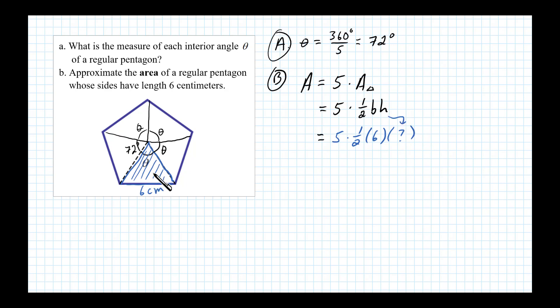Okay, so to find the height, what we'll do is we'll look at this triangle in a little more detail. We know this angle here is 72 degrees. If we drop an altitude, the altitude will form this right triangle.